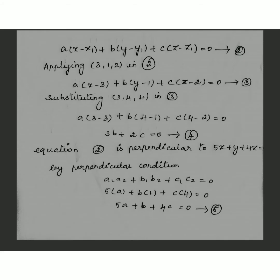Now we are going to substitute the given two points into this equation. First, substitute the first point (3, 1, 2) — we get equation 3. Again, substitute the second point into equation 3, and we get 3b + 2c = 0. Take this as equation 4.